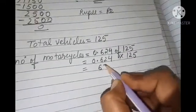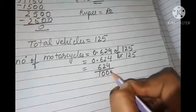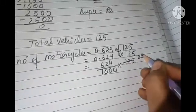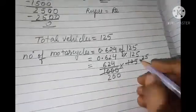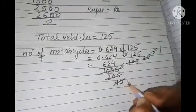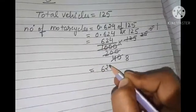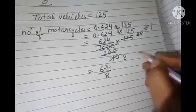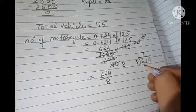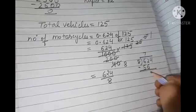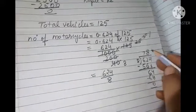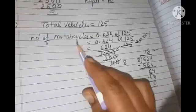Ab aap jaante ho, 0.624 of — of ka matlab kya hota hai: of ka matlab times, yaani multiply 125. Ab aap kya karoge — decimal hatao, isko common fraction mein convert karo. So this will be 624 upon 1000, multiply 125. Yeh dono 5 se cancel ho jaenge. 624 upon 8 — aap chahto to 8 se isko divide karke dekh lo, ya aap cancel bhi kar sakte ho. 8 sevens are 56; 8 eights are 64; 8 into 12 se 6 kiya 6; note down next is 4; 8 eights are 64. So your solution: 78. How many motorcycles were there — 78 motorcycles were there.